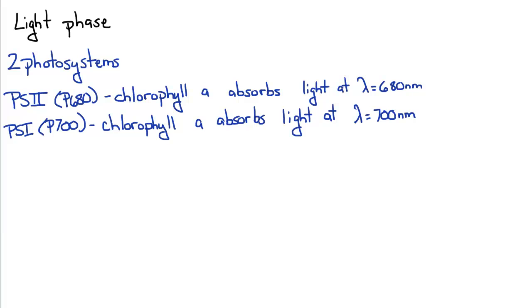The light phase is composed of two components. You've got two photosystems. You've got photosystem II, also called P680, because the chlorophyll A absorbs light at a wavelength of 680 nanometers.